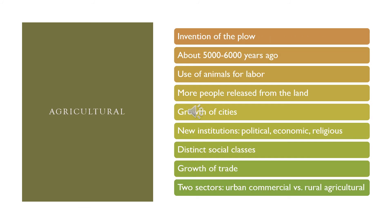Agricultural society goes from about 5,000 years ago all the way up until the Industrial Revolution — mid to late 1700s — so a very long time period. So much of world history, if you study world history, is going to be the agricultural system.